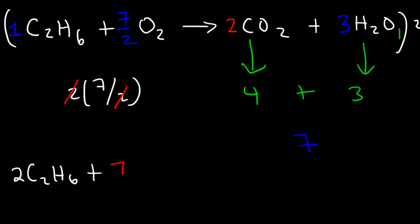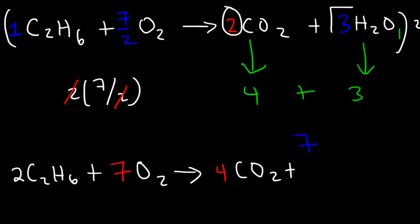So this yields seven oxygen molecules. Two times two is four, so that's four CO₂ molecules. And multiplying three by two gives six H₂O molecules. Now the reaction is balanced.